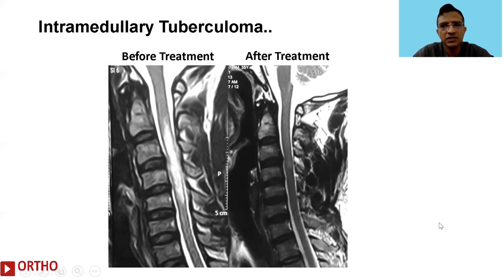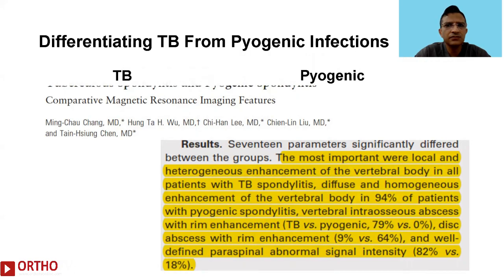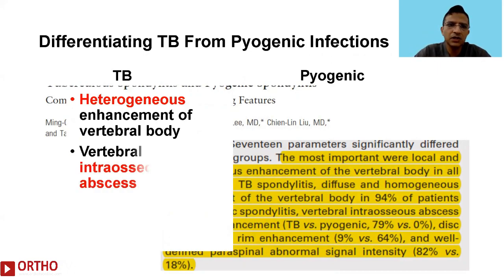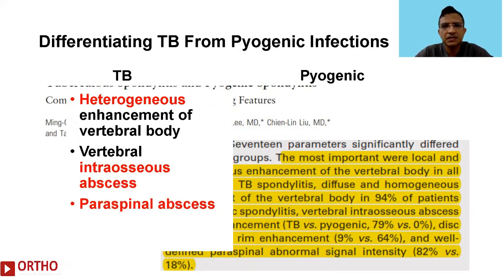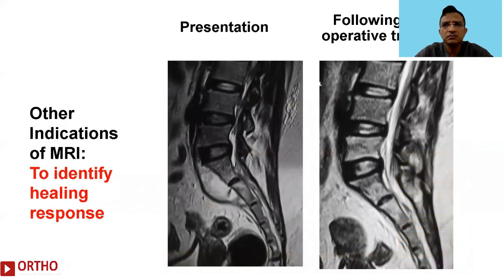There are certain telltale signs on MRI that differentiate tuberculous from pyogenic infection. Based on a key literature reference, when we do a contrast MRI: in tuberculosis there is heterogeneous enhancement of the vertebral body, vertebral intraosseous abscess, and paraspinal abscess. In contrast, in pyogenic infection you would see homogeneous enhancement of the vertebral body and disc abscess — this is how we differentiate between the two.